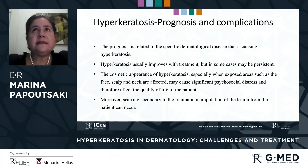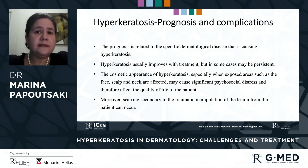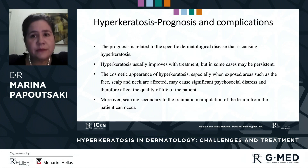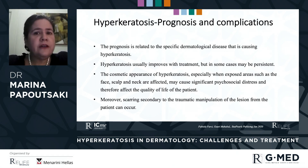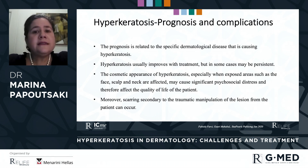The prognosis of a hyperkeratotic feature is related to the specific dermatological disease causing hyperkeratosis. It usually improves with treatment, but in some cases might be persistent and can relapse — patients must be informed about this. Moreover, the cosmetic appearance of hyperkeratosis, especially when exposed areas such as the face, scalp, and neck are affected, may cause significant psychosocial distress and affect the patient's quality of life. Scarring secondary to traumatic manipulation of the lesion by the patient can also occur.